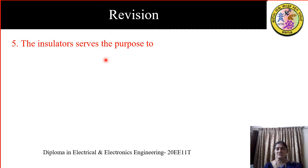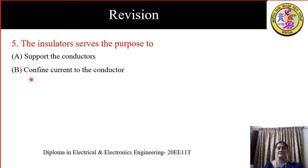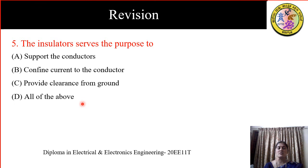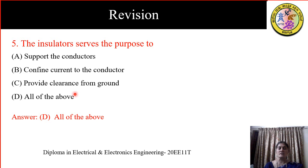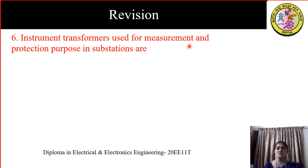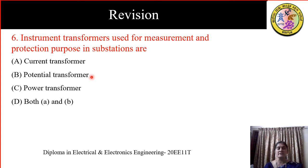The next question is: the insulator serves the purpose of — A) supporting the conductor, B) confining the current to the conductor, C) providing clearance from the ground, D) all of the above. The insulator does all these functions, so the answer is D, all of the above. The following question is: instrument transformers used for measurement and protection purpose in substations are — A) current transformer, B) potential transformer, C) power transformer, D) both A and B. Power transformers cannot be used for protection or measurement. Current transformer and potential transformer are the two types of instrument transformers. So the answer is D, both A and B.